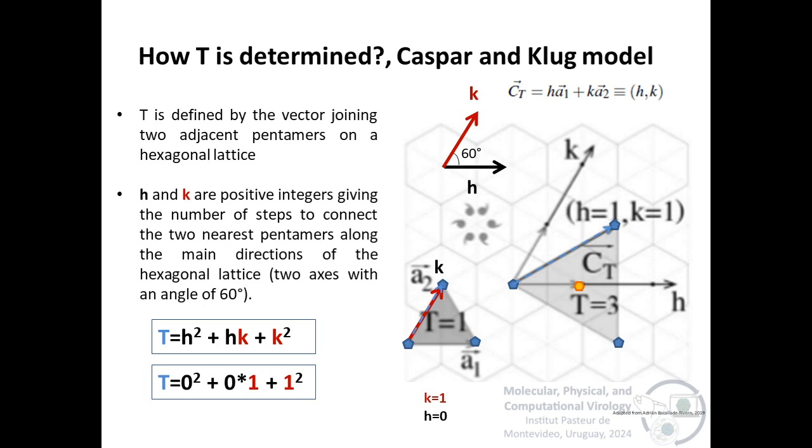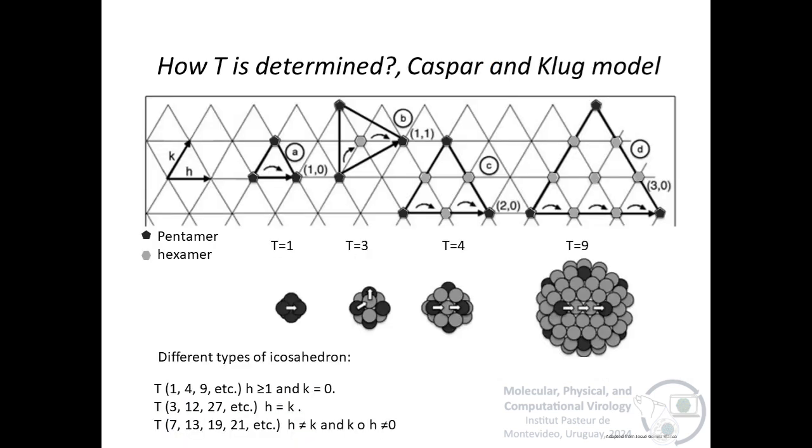On the other hand, in T equals 3, this is the fundamental face. To go from this pentamer to this pentamer, h is equal to 1 and k is equal to 1. For example, in this hexagonal lattice, for T equals 4, to go from this pentamer to this pentamer, h is 2 and k is 0. And in T equals 9, to go from this pentamer to this pentamer, h is equal to 3 and k is equal to 0.